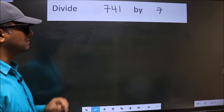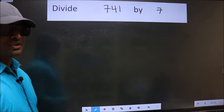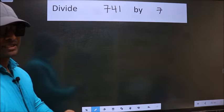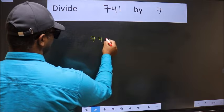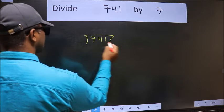Divide 7.41 by 7. To do this division, we should frame it in this way. 7.41 here and 7 here.